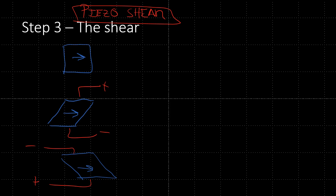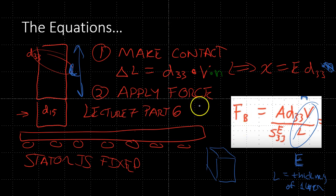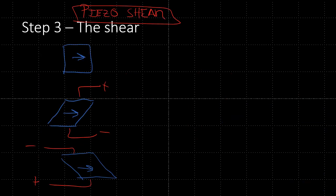You can also derive the equations for blocking force. Just like we derived for the 3-3, you can also derive it for the shear. In this case, you start with the equation: the angle is equal to the d coefficient times the electric field in the 3 direction - or you could say the 1 direction. That's how you end up with the angle.